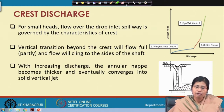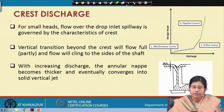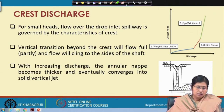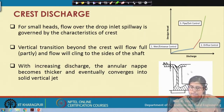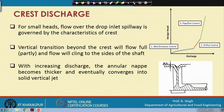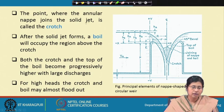For small head, the flow over the drop inlet spillway is generally governed by characteristics of the crest. The vertical transition beyond the crest will flow either fully or partially, and the flow will cling to the side of the shaft. However, with increasing discharge, the annular nappe becomes thicker and it eventually converges into a solid jet. This shows how the flow takes place in the crest design.